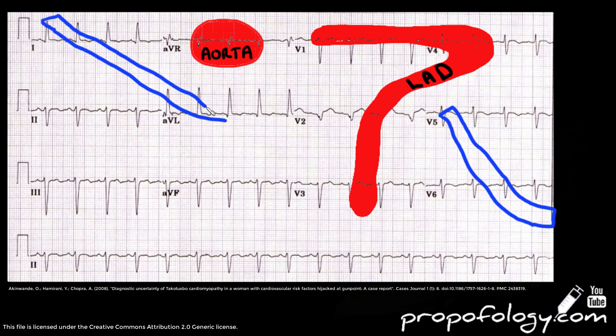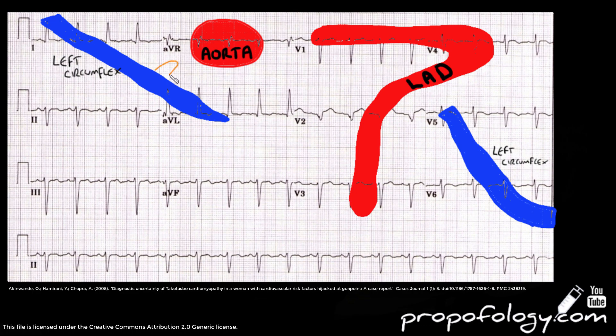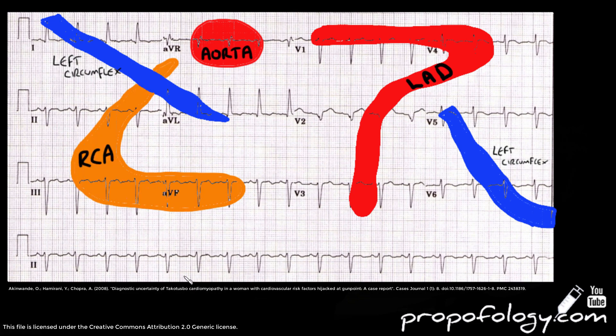Think about the left circumflex comes in V5, V6, and then if you go to the left side of the screen you see it traversing through 1 and AVL, and that's your left circumflex. Your right coronary artery starts up at the corner of AVR and goes into 2, 3, and AVF. Those are your inferior coronary arteries.